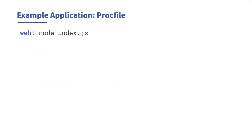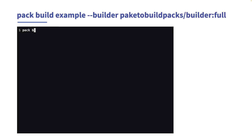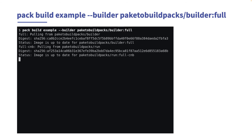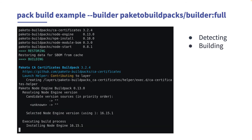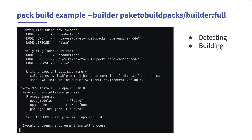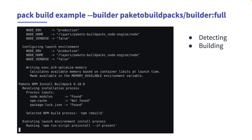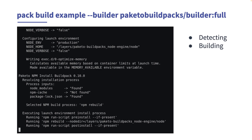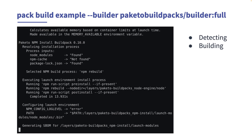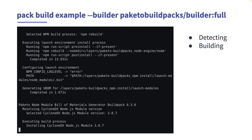Finally, we provide a Heroku-style proc file to describe how to start our application. Using the Buildpacks pack tool, we can build an image that we name Example. That's all there is to building an application using Buildpacks. You write your application and declare its dependencies, then use pack with a builder to build the production image.